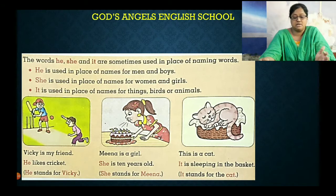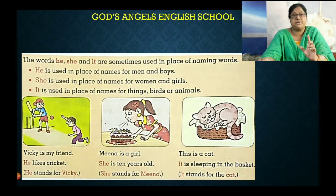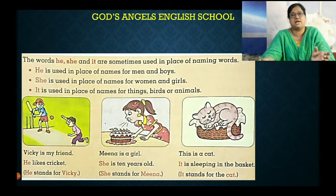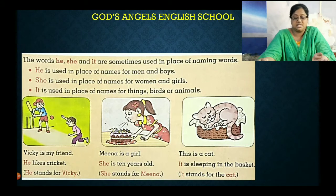Naming word — Meena is a girl. She is 10 years old. अब Meena को हटाकर — Meena is 10 years old नहीं, हमने she लगाया. Meena का नाम हटाकर she word वहाँ use कर सकते हैं. She is a girl, she is 10 years old. So she stands for Meena.